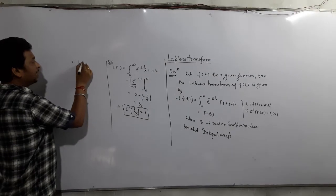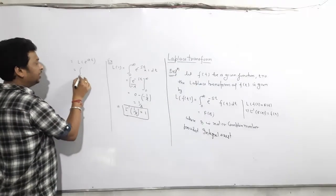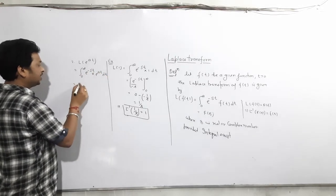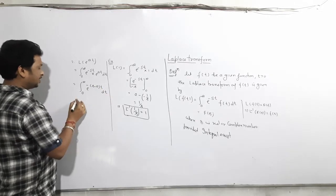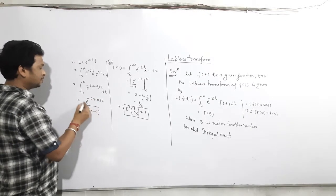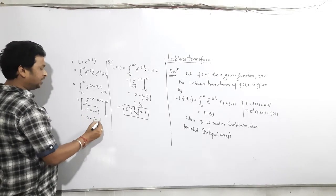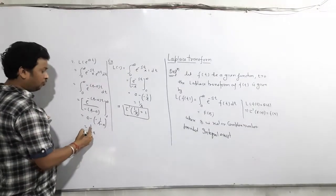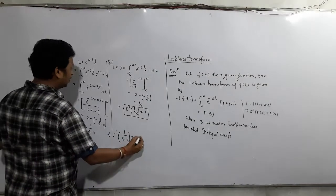Second example: Laplace of e to the power at. This means the integral from zero to infinity of e to the power minus st times e to the power at dt, which equals the integral of e to the power (a minus s)t dt. When we put the infinite limit we get 0, and when we put 0 we get 1 over (S minus a). So Laplace of e to the power at is 1/(S − a). Similarly, Laplace inverse of 1/(S − a) is e to the power at.